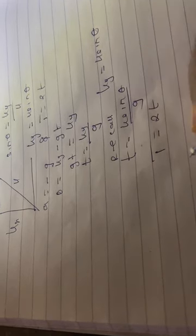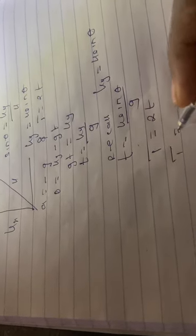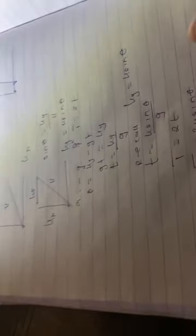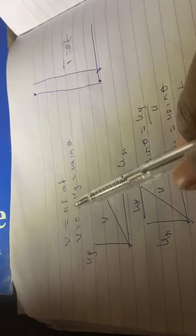So time of flight = 2u sine theta / g. This is the equation for the time of flight.